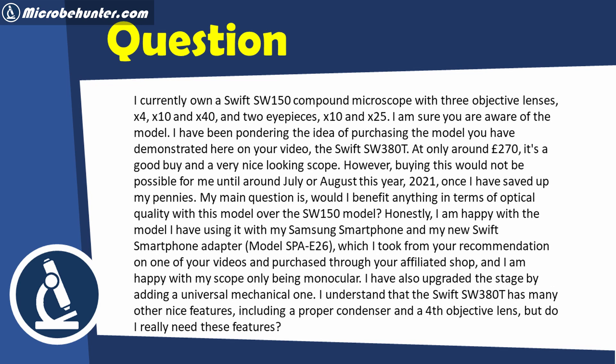Honestly, I'm happy with the model I have using it with my Samsung smartphone and my Swift smartphone adapter, which I took from your recommendation on one of your videos and purchased through your affiliate shop, and I'm happy with my scope only being monocular. I have also upgraded the stage by adding a universal mechanical one. I understand that the Swift SW380T has many other nice features including proper condenser and a fourth lens, objective lens. But do I really need these features?